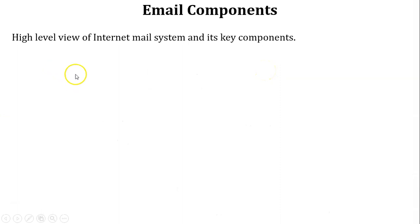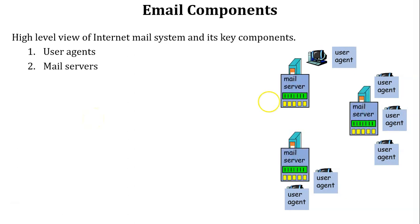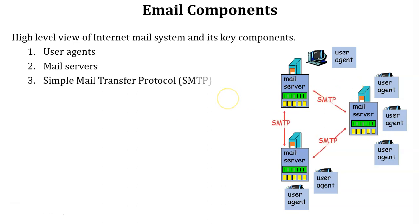To understand the high-level view of the internet mail system, we need to learn the key components of email. The first component is the user agent, which is present on user devices like tablets, mobiles, and PCs. The next component is the mail server, where users' incoming and outgoing mail are stored in the user mailbox. The third component is Simple Mail Transfer Protocol — using SMTP, mails are exchanged from one server to another, and all incoming and outgoing mails are stored on the mail server.